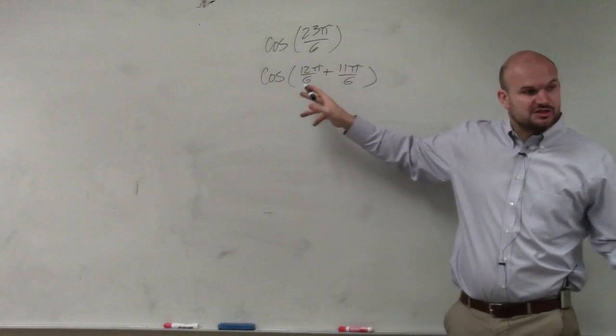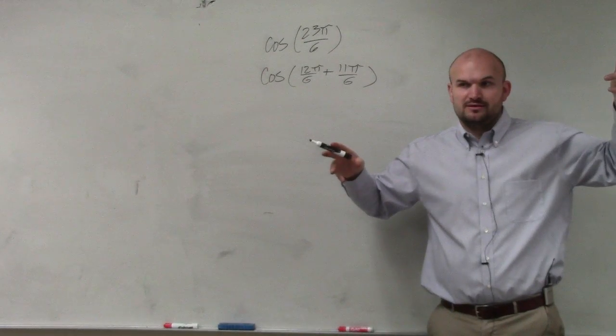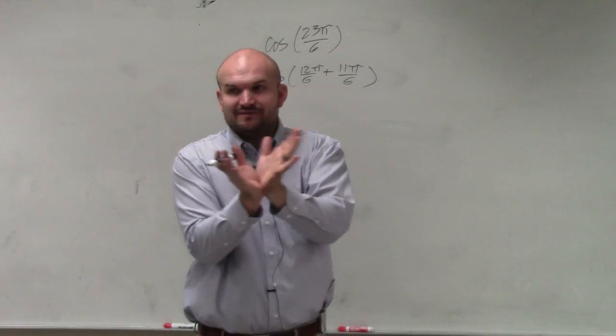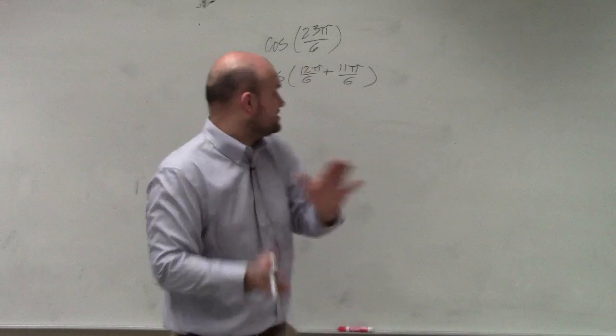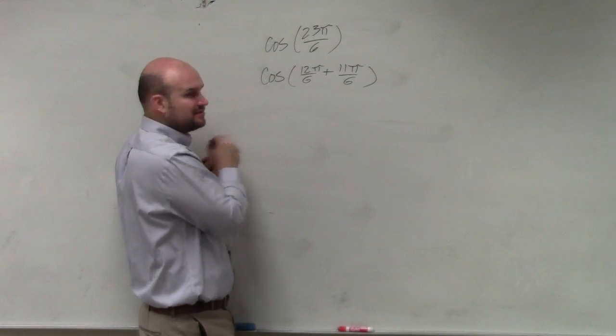However, 12π/6 is just 2π. That's just, again, it's just a wrap around the circle once, right? But if you take that away, you're still going to have the same initial and terminal sides. Because all you're doing by adding 2π is just doing a revolution around the circle.